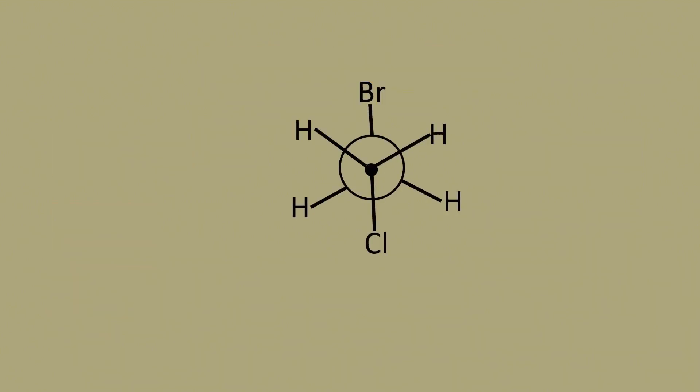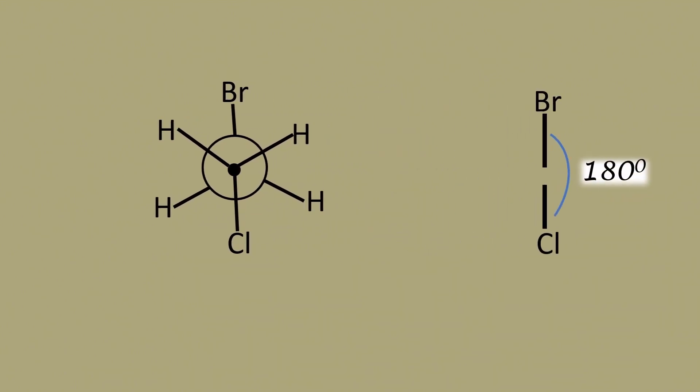The molecule can achieve this kind of conformation. In this case, the heavy groups, that is the bromo and chloro, are 180 degrees apart. This is the most stable form of the conformers, and it is known as the staggered conformer, specifically the anti-staggered conformer.